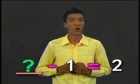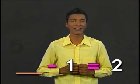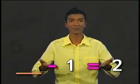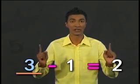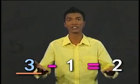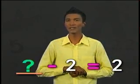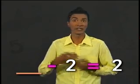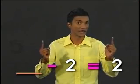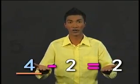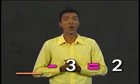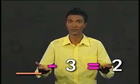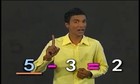Next, what number minus 1 equals 2? The answer should be 3. 3 minus 1 equals 2. What number minus 2 equals 2? The answer should be 4. Now, what number minus 3 equals 2? Yes, 5.